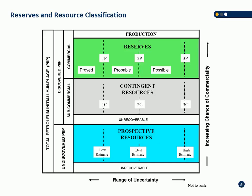On the McKelvey box: up and down we have risk, left and right we have uncertainty. We've got all of our various volumes on here, and this is identical to what you'll find in COGI. COGI and PRMS are exactly the same.